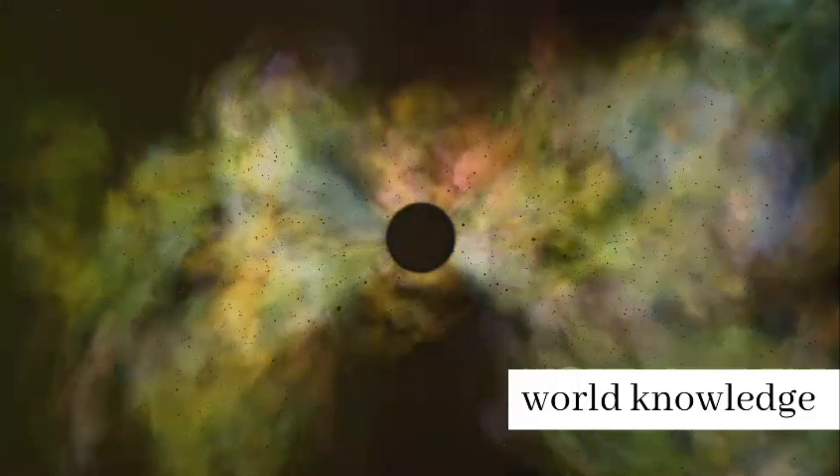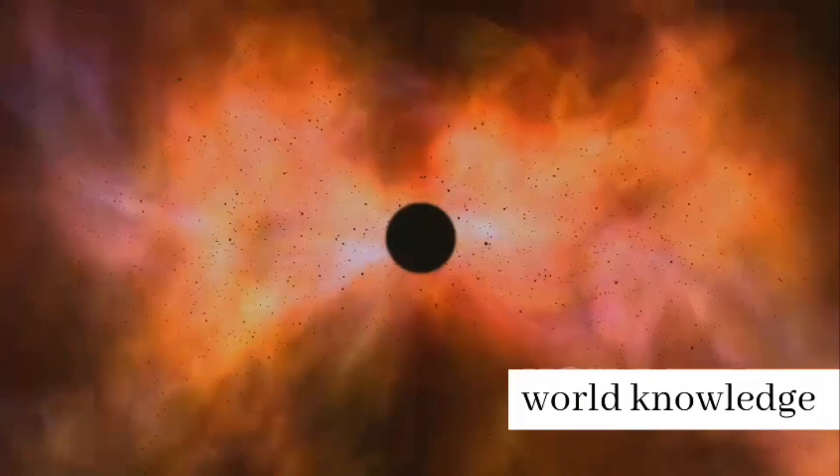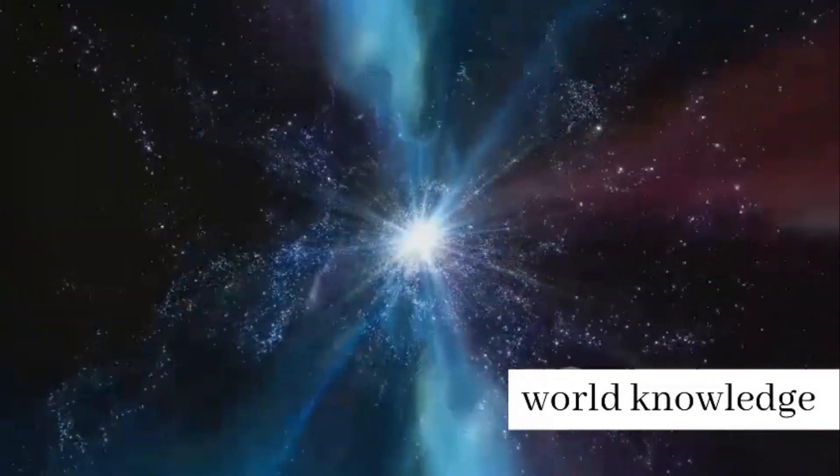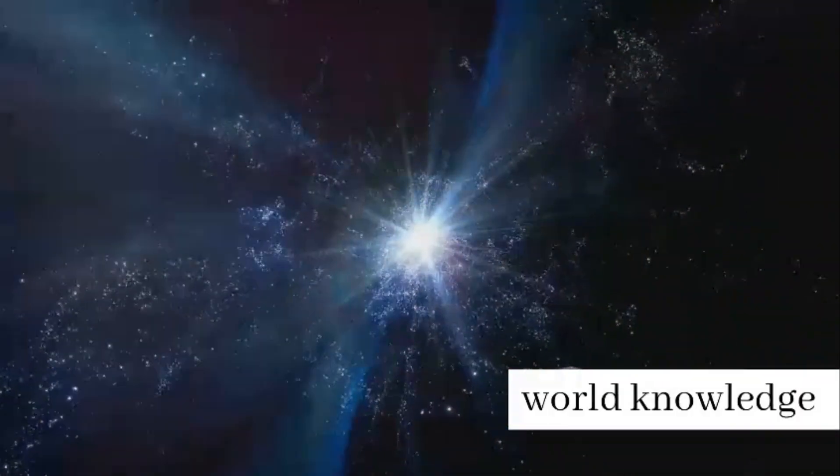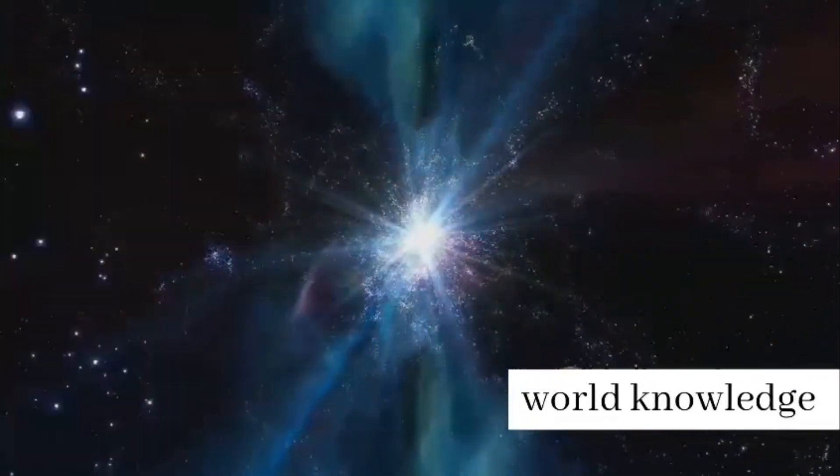When a star at least 20 times the mass of our sun exhausts its nuclear fuel, it collapses under its own gravity, creating a supernova explosion. The core that remains after this explosion is so dense and heavy that it warps the fabric of spacetime around it, forming a black hole.